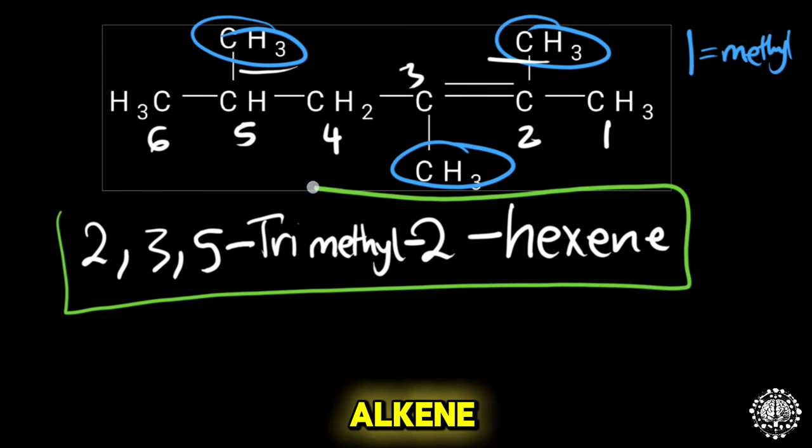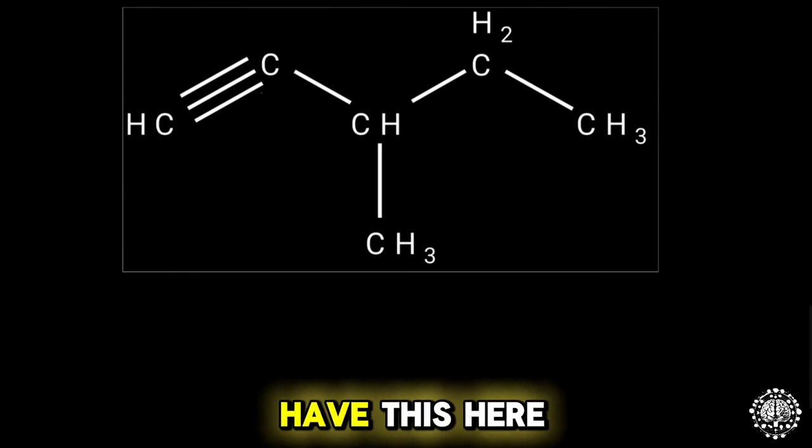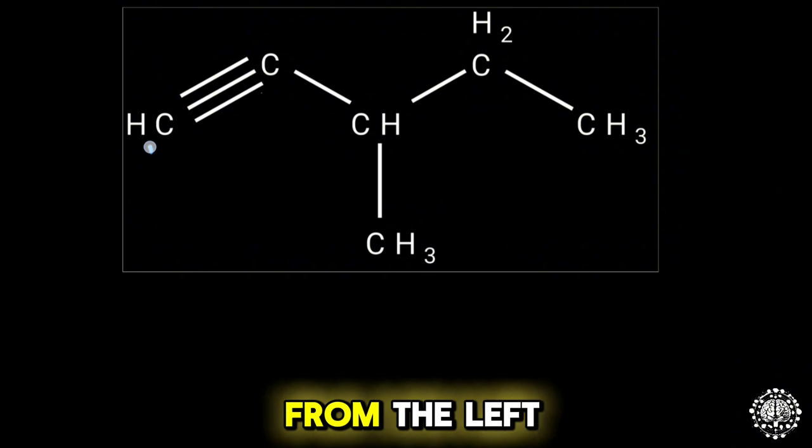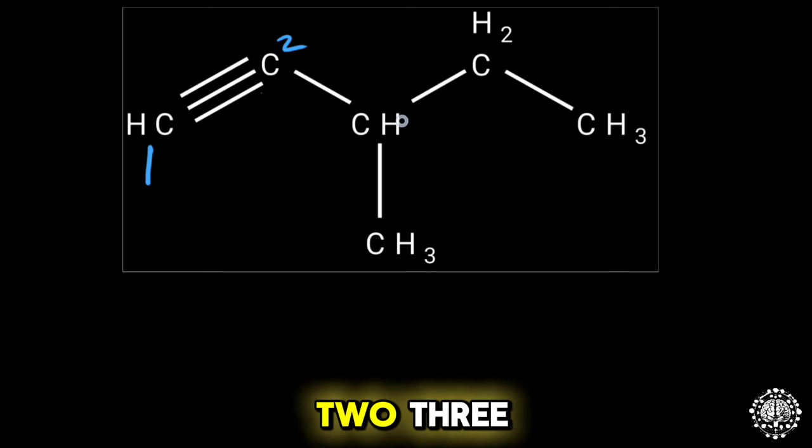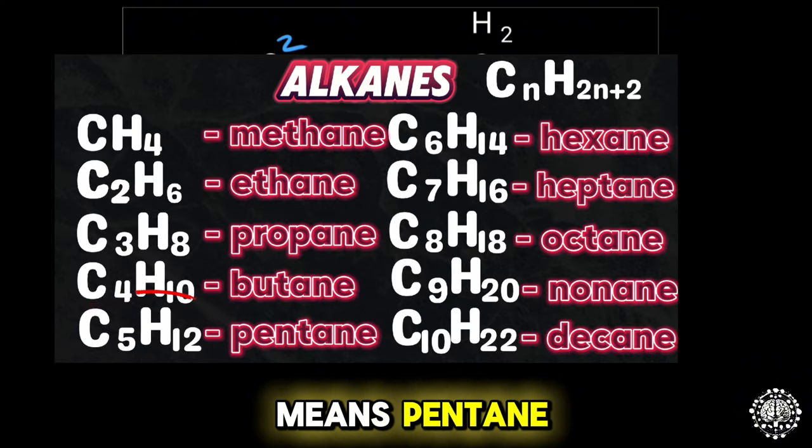Now let us try naming the alkyne. Let's say you have this here. How can you name it? First of all, we'll number the longest sequence. We'll start from here, we'll start from the left side because that's where the bond is. We have one, two, three, four, five. Now five carbons means pentane.